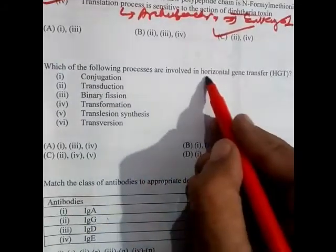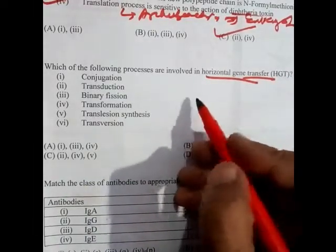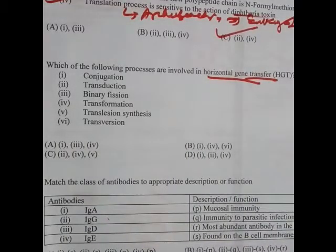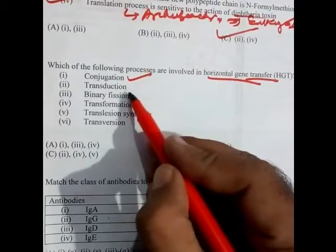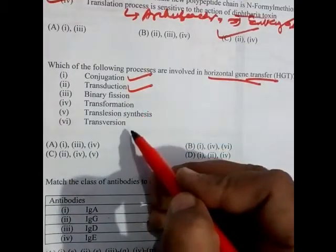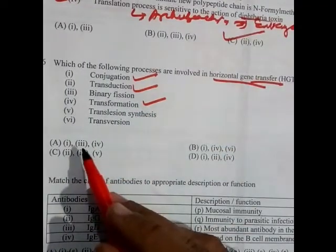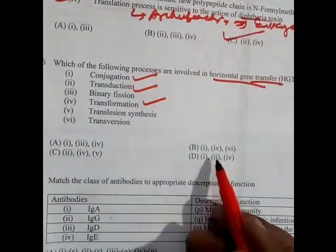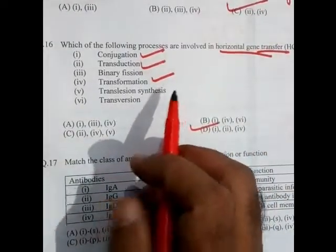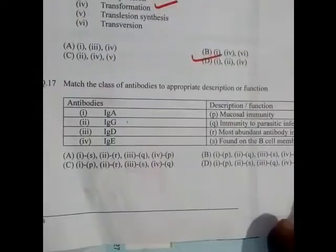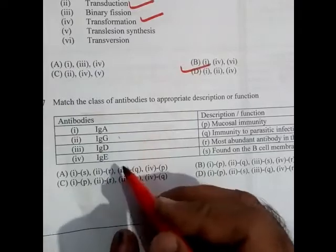Question 16: Which processes involve horizontal gene transfer? The answer is conjugation, transduction, and transformation — these are the first, second, and fourth options. Most bacteria become drug-resistant through these horizontal gene transfer mechanisms.